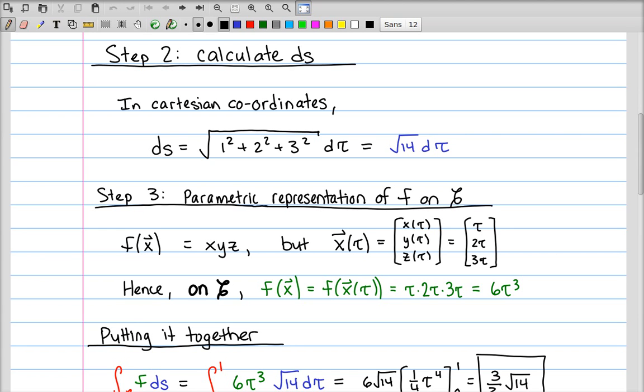So on that curve, x equals tau, y equals 2 tau, and z equals 3 tau. So on the curve c, the function f of x can be thought of as f of x of tau, which is just tau times 2 tau times 3 tau, or 6 tau cubed.